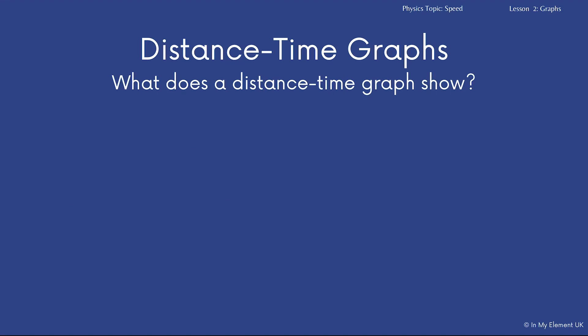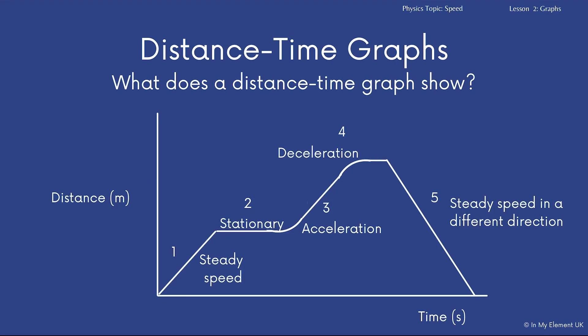So what does the distance time graph show? Now you might be given one of these and it would have all these different points in it. This graph here has got them all labelled. So if you have a look at point one, you can see that there is an increase in time and distance. So look at the x-axis, the x-axis is labelled time in seconds and the y-axis, the vertical one, is labelled distance in metres.